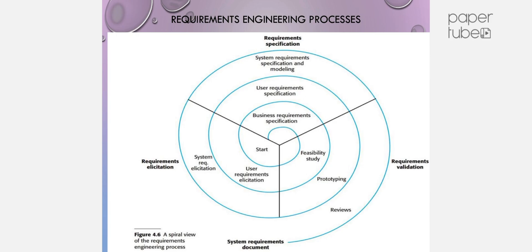Then the requirements are validated. The output is the system requirements document, known as the SRS — Software Requirements Specification. This is the Requirements Engineering process structure.